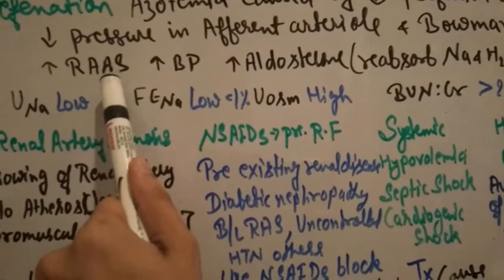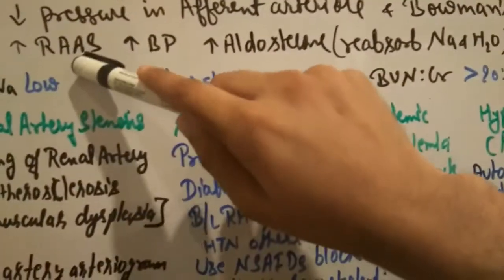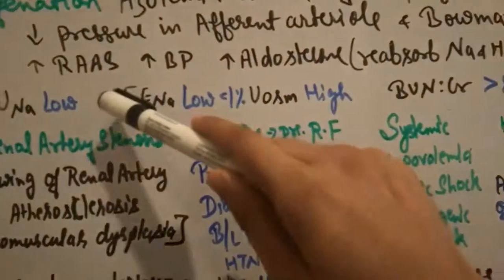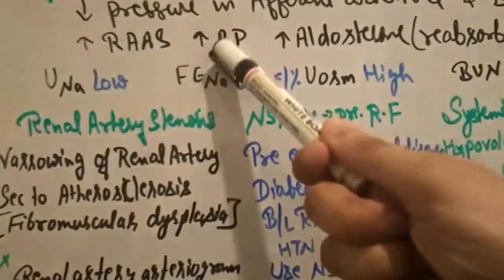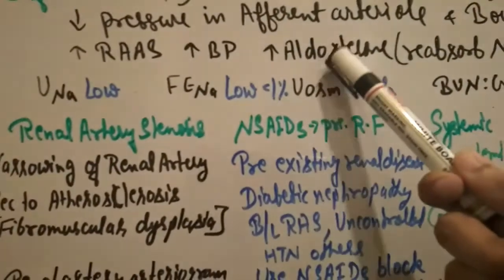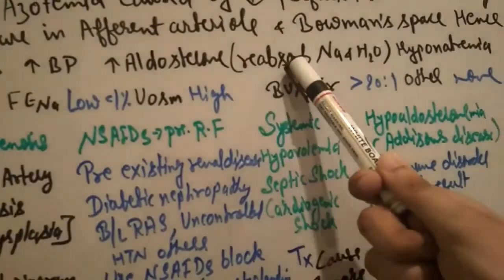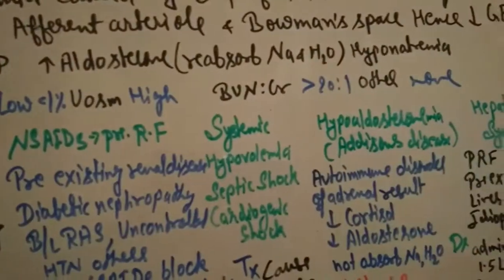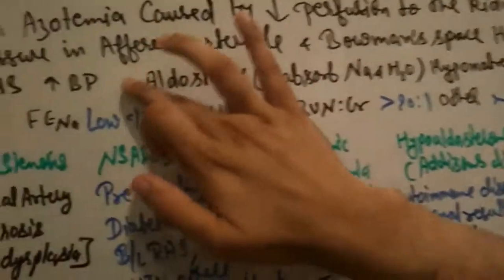When GFR decreases, the blood supply decreases, pressure decreases, the RAAS system activates. It's the renin-angiotensin-aldosterone system that activates because it senses there is hypovolemia. But the supply of blood is decreased to the kidney only, not the whole body. So this system activates which increases blood pressure.